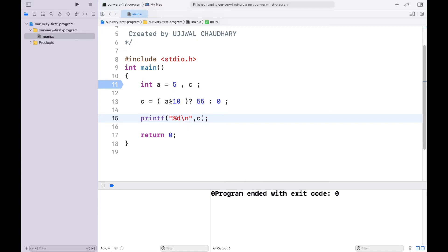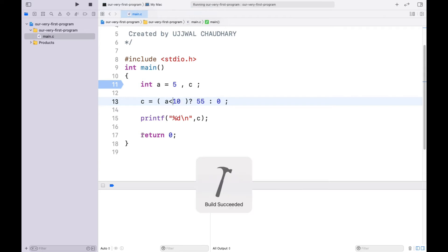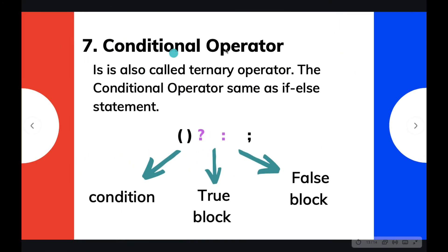Let's change the condition to a < 10, and then we should expect the value of c to be 55. We will discuss the differences between the conditional operator and the if-else statement in the flow of control unit, even though they work in a similar fashion.